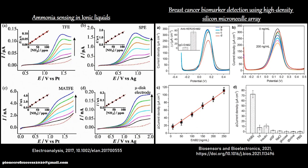Finally, two examples show LSV for sensing applications. The first is ammonia sensing: the oxidation of ammonia to nitrogen is an irreversible reaction used for sensing. As concentration increases, the peak intensity in LSV also increases. The peak current can be plotted as a calibration curve, allowing determination of unknown ammonia solution concentrations.